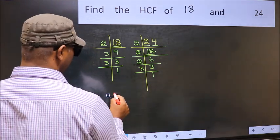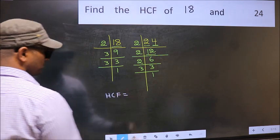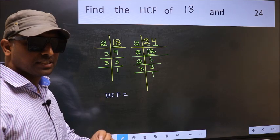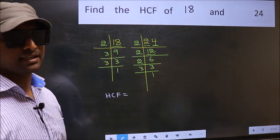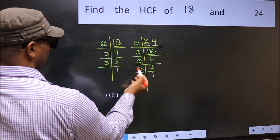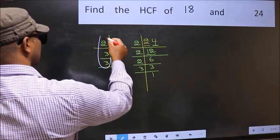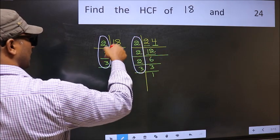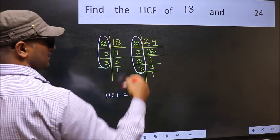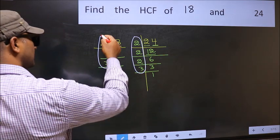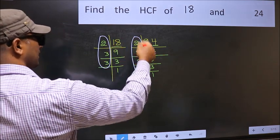Therefore, our HCF is the product of the numbers which should be present in these two places. That is, here and also here. Here and here. So now we should find the numbers which should be present here and here.